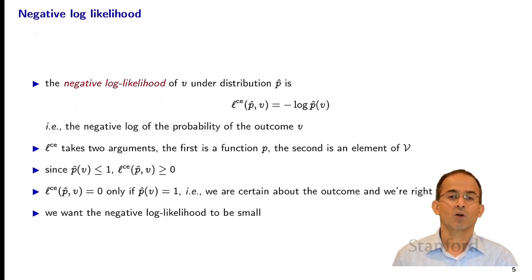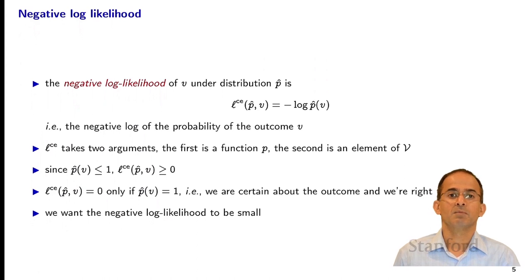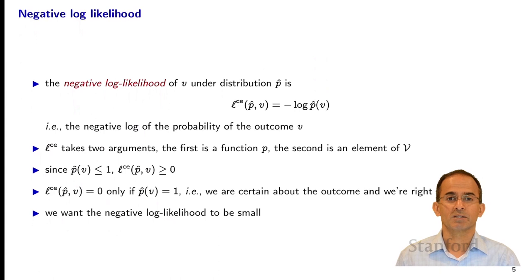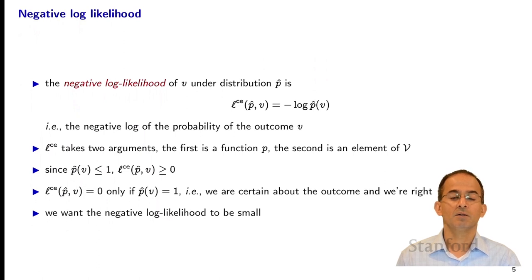Because p-hat is less than or equal to 1, the negative log of it must be greater than or equal to 0. The only way the negative log equals 0 is if p-hat equals 1, meaning we would be completely certain about the outcome — the probability of getting that particular v would be 1, and the probability of any other v would be 0. So we want the negative log likelihood to be small, meaning p-hat of v should be close to 1.